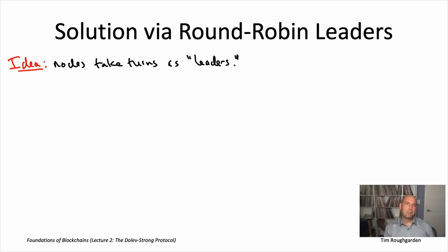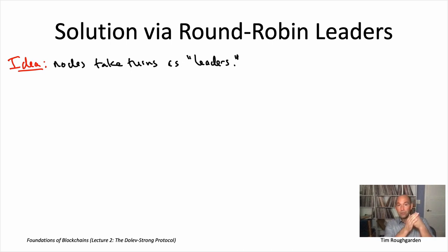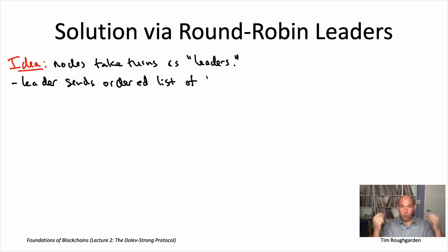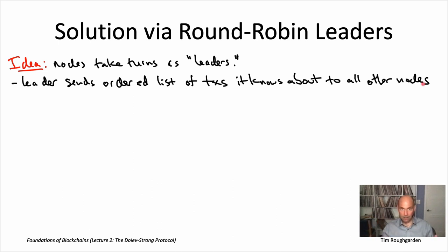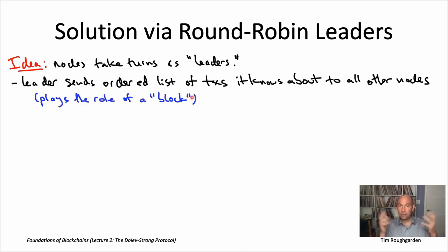It's going to be the leader's responsibility to coordinate the nodes during that time step. So if I'm node number seven and it's a time step where I'm the leader, I'm going to take all the transactions I know about — that clients have told me about and that haven't yet been added to my local history — and sequence all of those transactions in some way. I'll have an ordered list of the pending transactions I'm aware of, and I will just send my ordered list to everybody else in this time step.